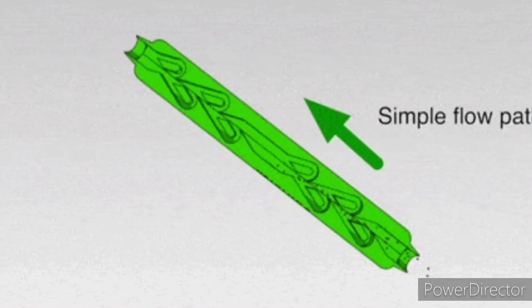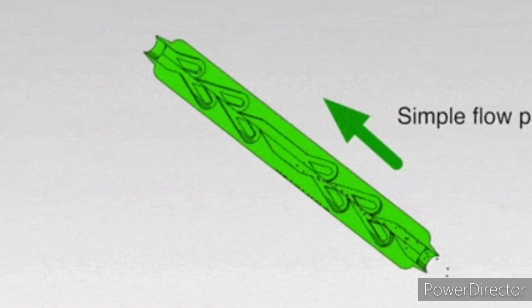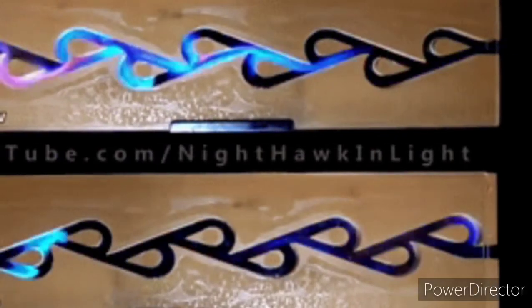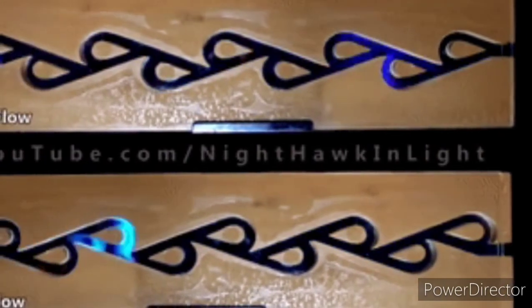This lends support to Tesla's patent assertion that in the valvular conduit in his diagram, a pressure ratio approximating 200 can be obtained so that the device acts as a slightly leaking valve.